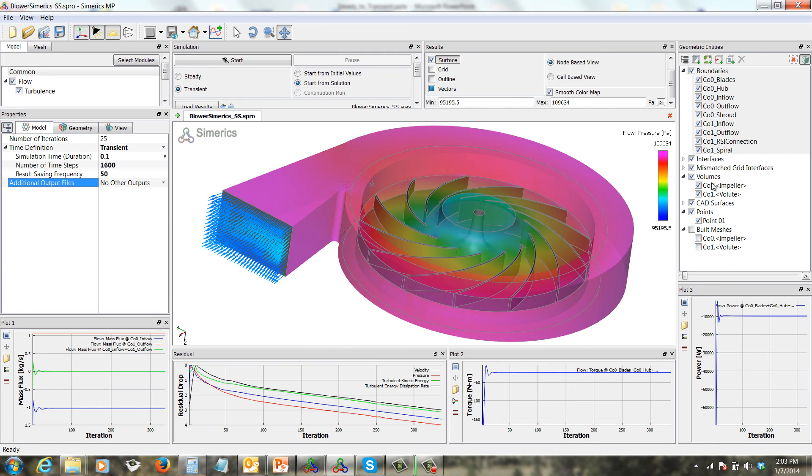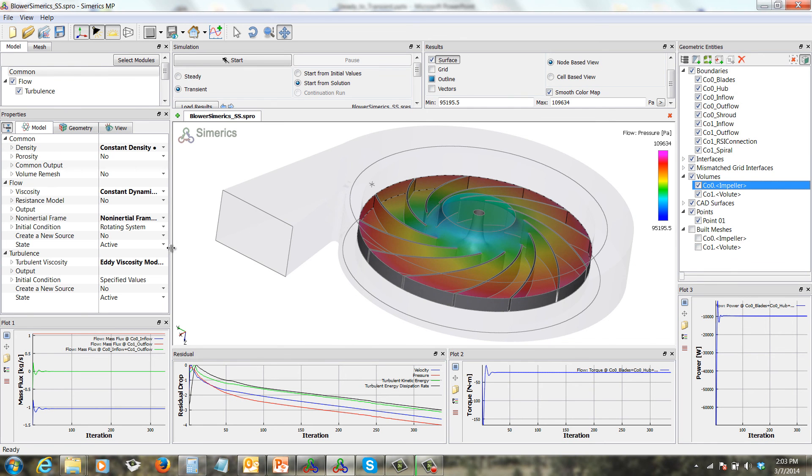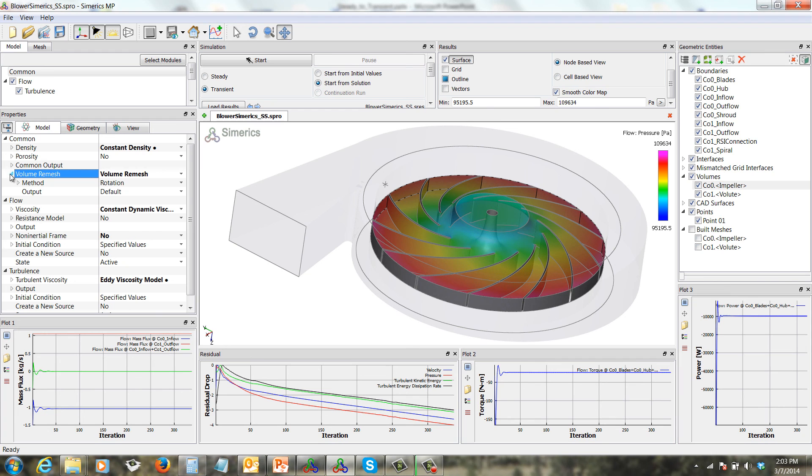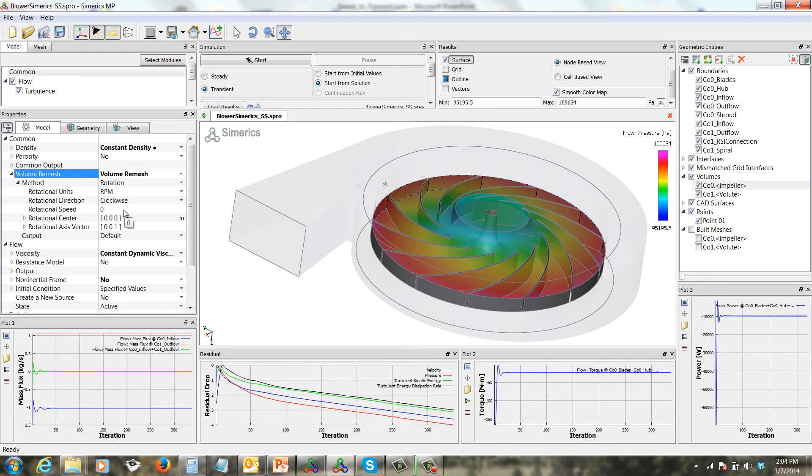So let's pick the impeller volume and deactivate the non-inertial frame. Also under the common module, let's activate the volume remesh. By default, the method is rotation, which is what we want. Put in the RPM as 4000. Rotational center is 000, which is right, that's right at the center here. And it's rotating about the z-axis.